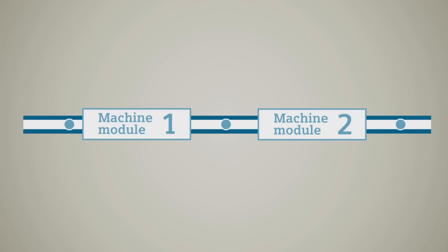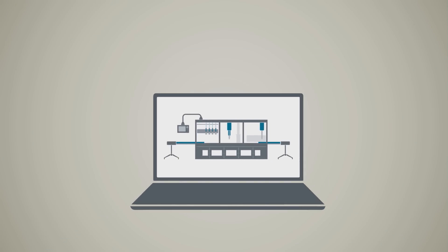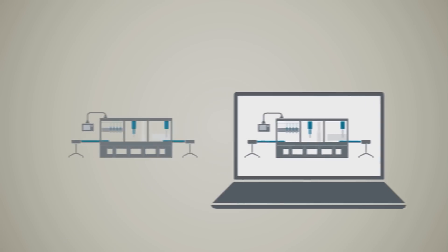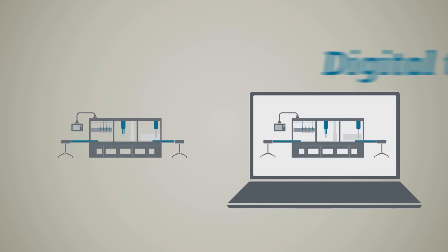To ensure that this happens smoothly, all processes are simulated on the computer. Using a digital duplicate, known as the digital twin,